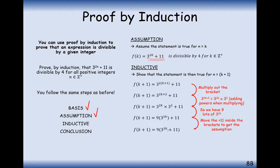I'm going to move a plus 11 inside the bracket so I can use my assumption from step 2. If I expand those brackets, I'd get plus 99 whereas I actually want plus 11, so I'll have to subtract 88 to adjust. Now I've got two components: one that is divisible by 4 from the assumption step, and one that clearly has a factor of 4 — specifically 22 times 4.